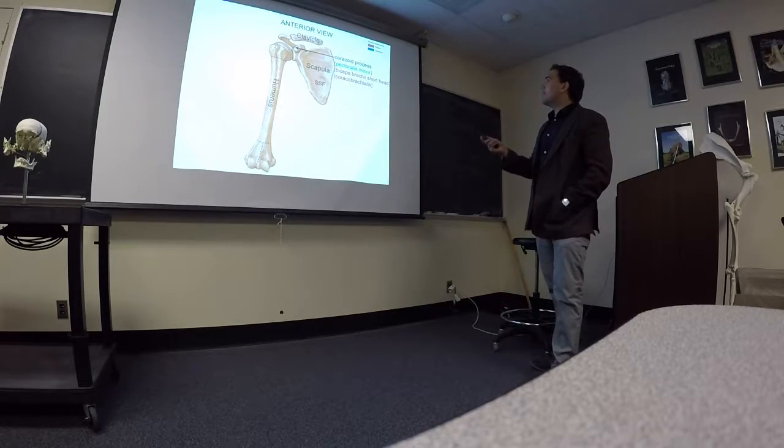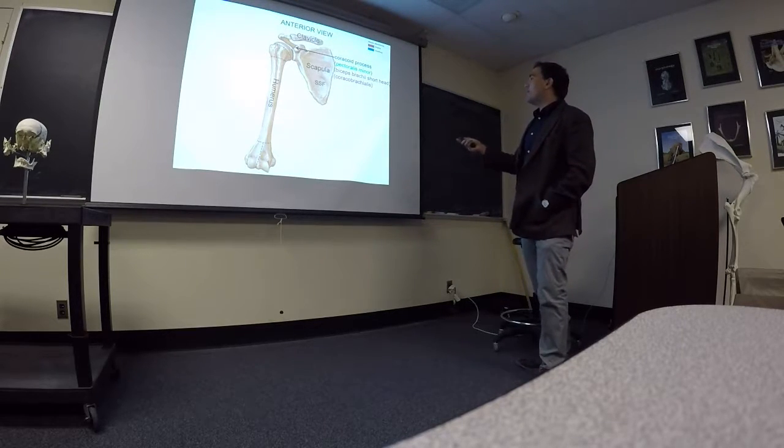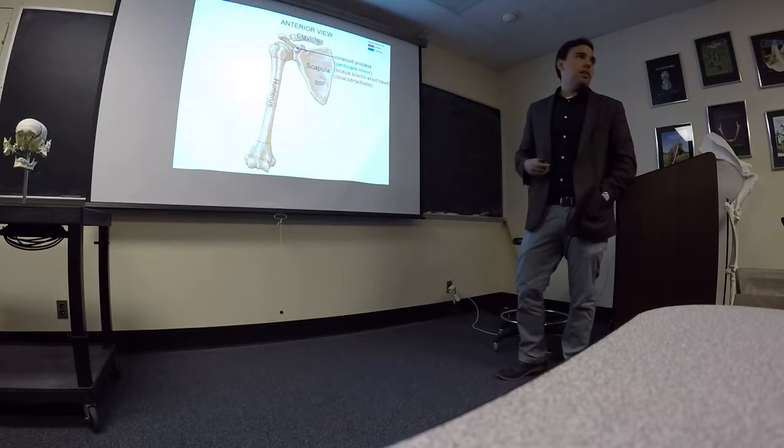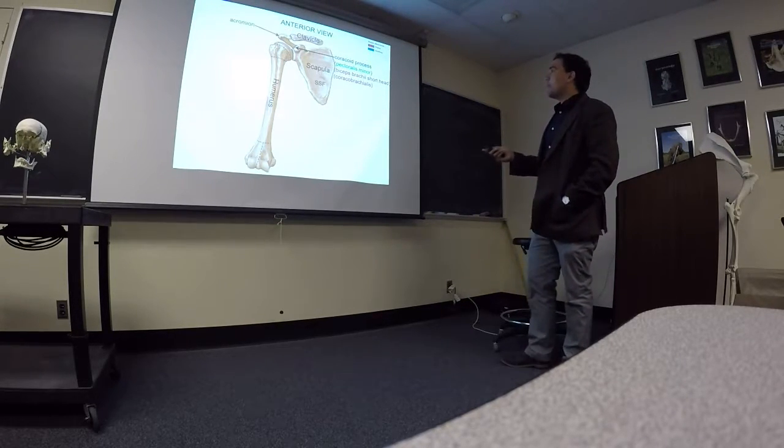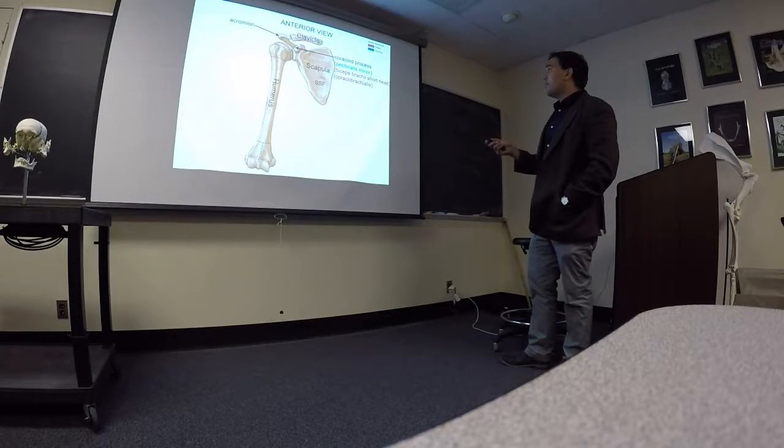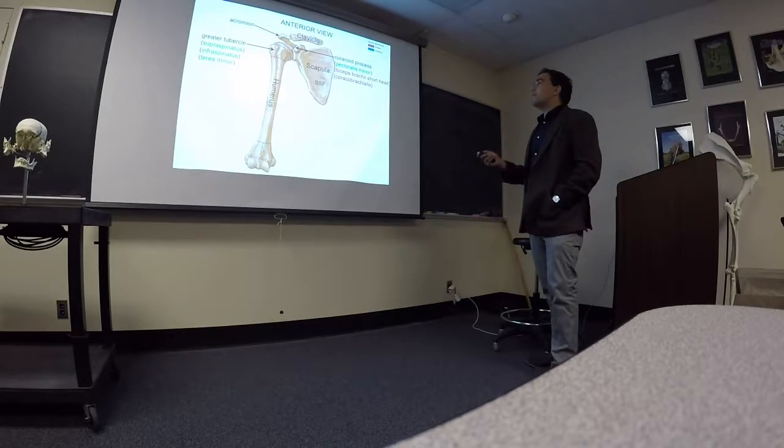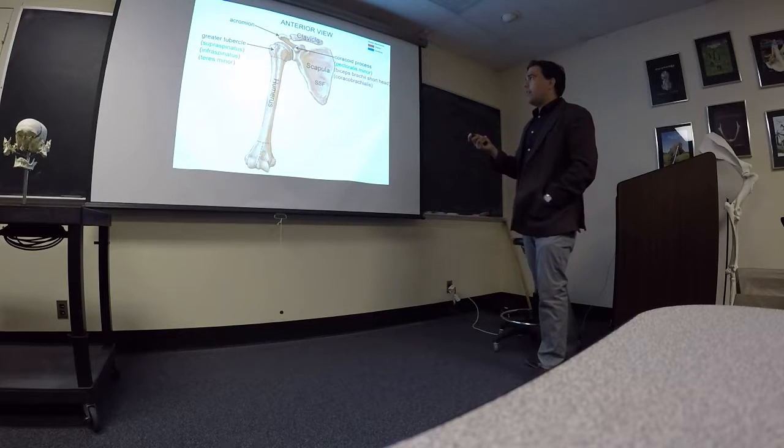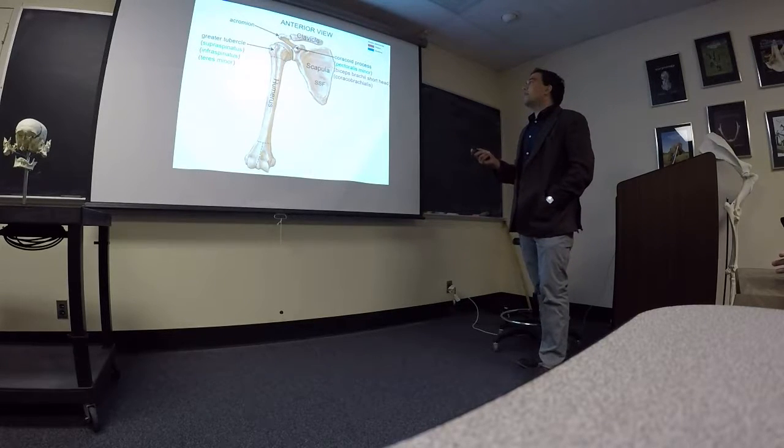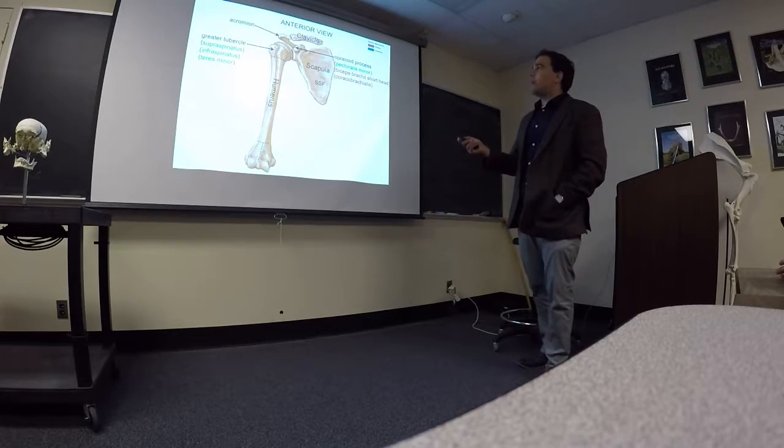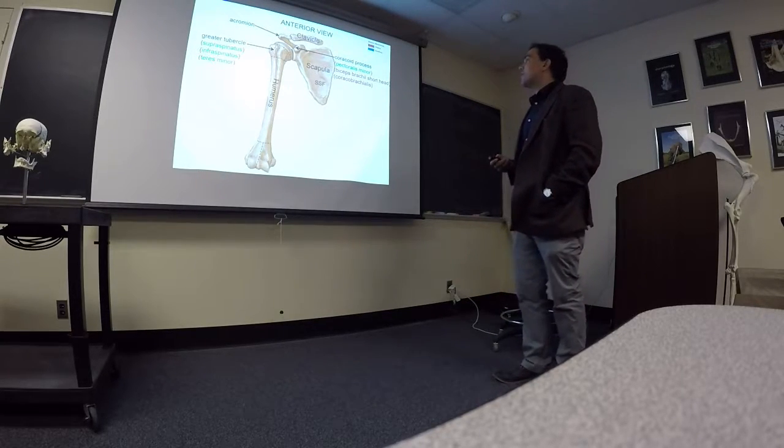For instance, the pectoralis minor, which is a muscle that we saw way back in the thorax, is inserting here and is going to act on the scapula or move the scapula. So anytime you see a muscular name in blue here, it's moving the element that it's connected to. And the red ones are sort of anchored here but moving elements more distally in the case of biceps here. Posterior to the coracoid, we have this process here called the acromion, sort of laterally here.